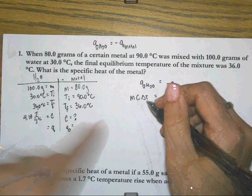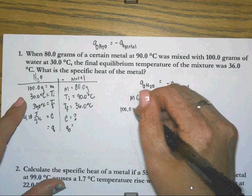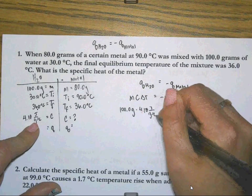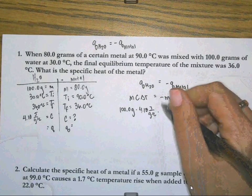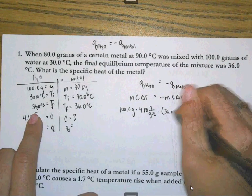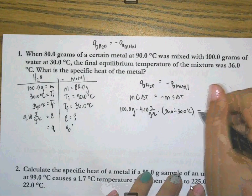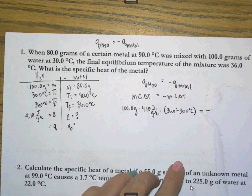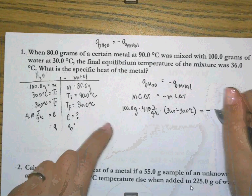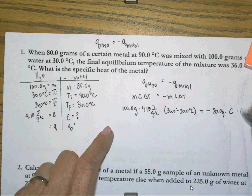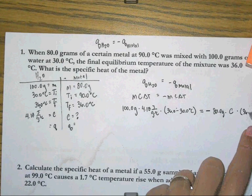So that's going to give me for the water 100.0 grams times 4.18 joules over grams degree Celsius times 36.0 minus 30.0 degrees Celsius equals, don't forget your negative, negative 80.0 grams times the C I want to find times 36.0 minus 90 degrees Celsius. And I'm off the screen.